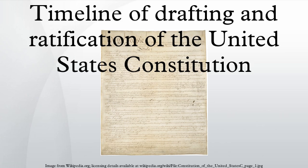March 3: Massachusetts elects delegates to the upcoming Constitutional Convention. Elbridge Gerry, Nathaniel Gorham, Rufus King, and Caleb Strong will attend. March 6: New York elects delegates to the upcoming Constitutional Convention. Alexander Hamilton, John Lansing Jr., and Robert Yates will attend. March 8: South Carolina elects delegates to the upcoming Constitutional Convention. Pierce Butler, Charles Cotesworth Pinckney, Charles Pinckney, and John Rutledge will attend.